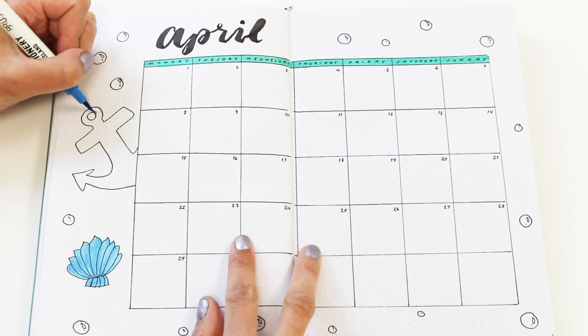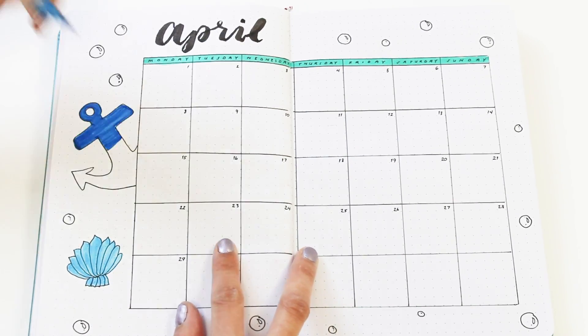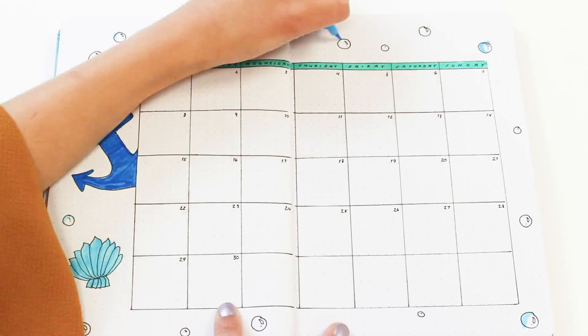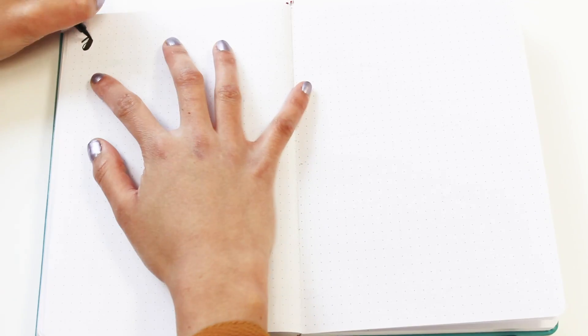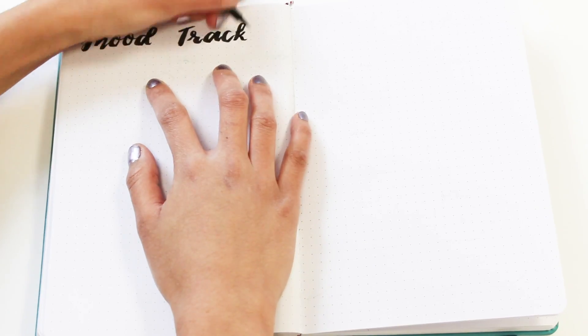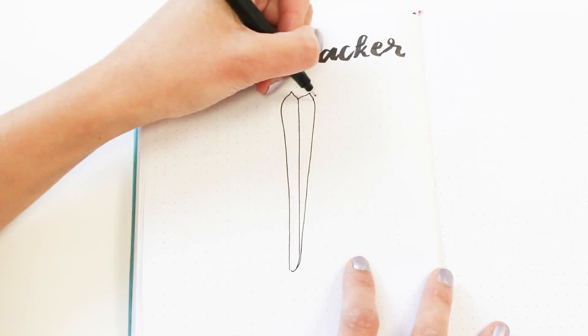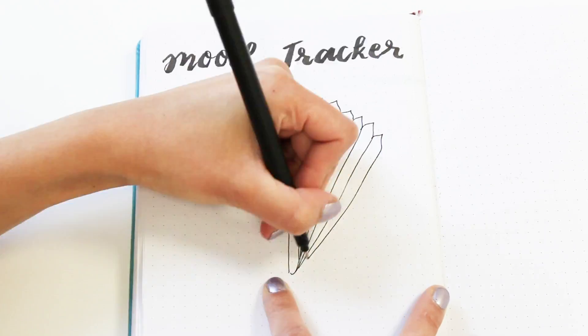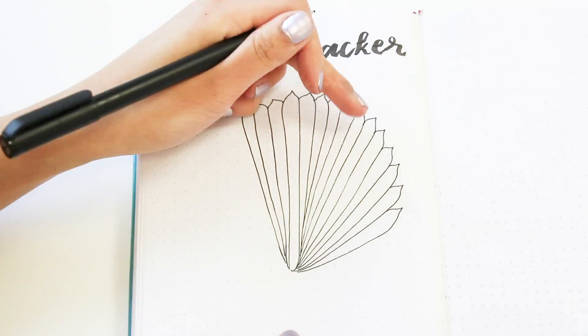I'm using a lot of blues for this theme because my last theme used a lot of different colors, so I just wanted to do a more monochrome theme. But you can definitely do a more colorful one if that's your style and what you prefer. Next I'm just doing a mood tracker. For this one, I'm just drawing a shell and dividing that into 30 sections, one for each day. I'm definitely not taking the credit for this; I just really like the design, so I'm going to leave a link to my inspiration in the description box below.